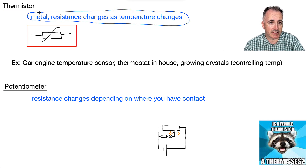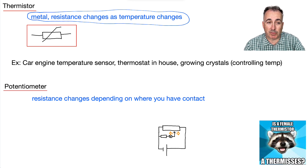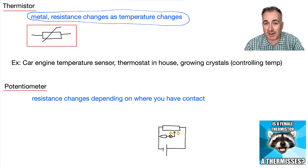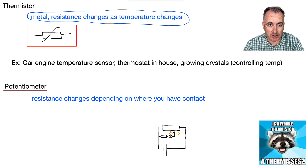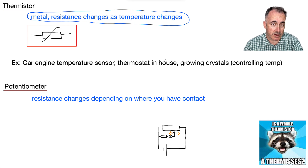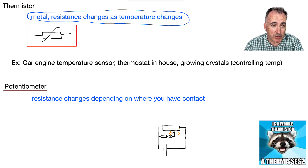The thermistor's resistance is dependent on temperature. For example, it could be in a car engine as the temperature sensor. It could be in your house — how we decide what temperature to make your house. Your house knows the temperature by checking the resistance across the thermistor, and as it changes, it knows the temperature has changed. Also similarly, controlling temperature when growing crystals.